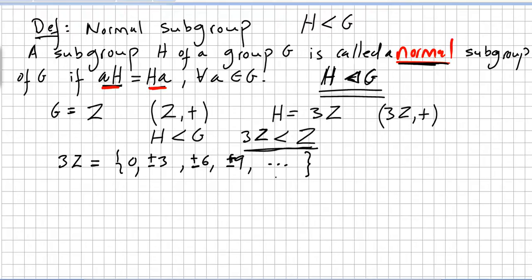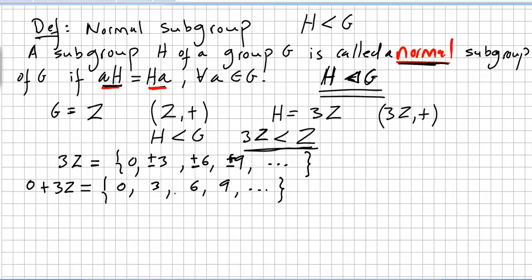If the multiples of three under addition are a normal subgroup, the left cosets will equal the right cosets. The operation is addition. So 3Z is the set: zero, three, six, nine, plus and minus. Let us take the left coset 0 plus 3Z: 0+0=0, 0+3=3, 0+6=6, 0+9=9, so it is basically the same set. For 1 plus 3Z: 1+0=1, 1+3=4, 1+6=7.